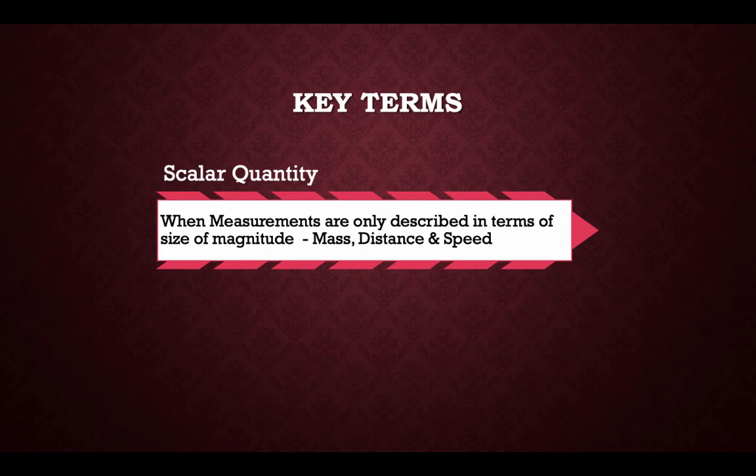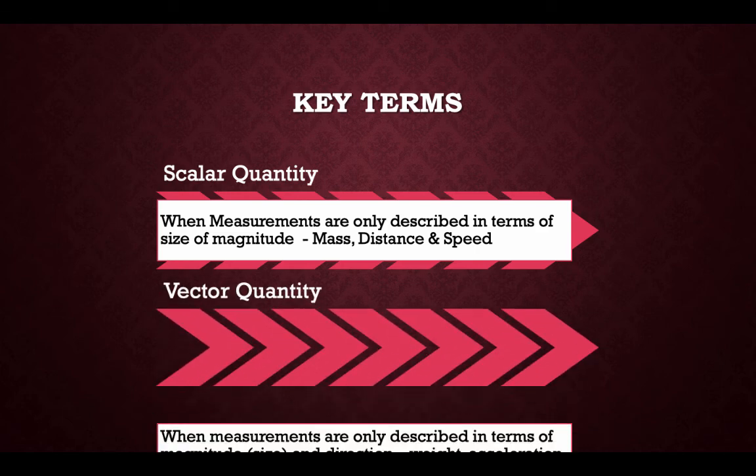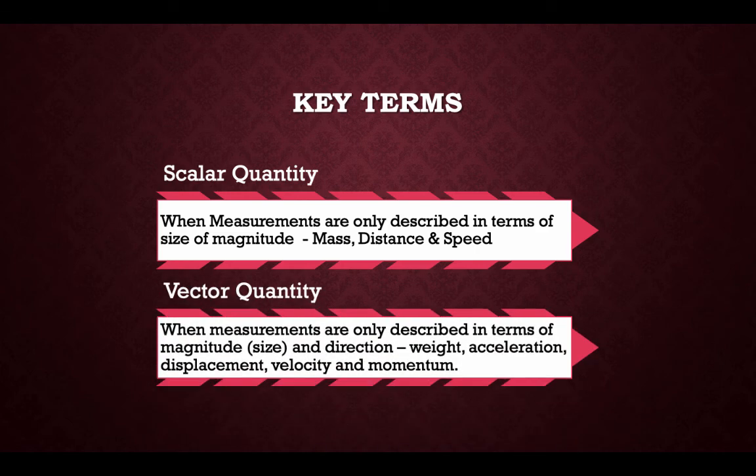Scalar quantity: when measurements are only described in terms of their size or magnitude — for example, mass, distance and speed. Vector quantity: when measurements are described in terms of magnitude and direction — for example, weight, acceleration, displacement, velocity and momentum.